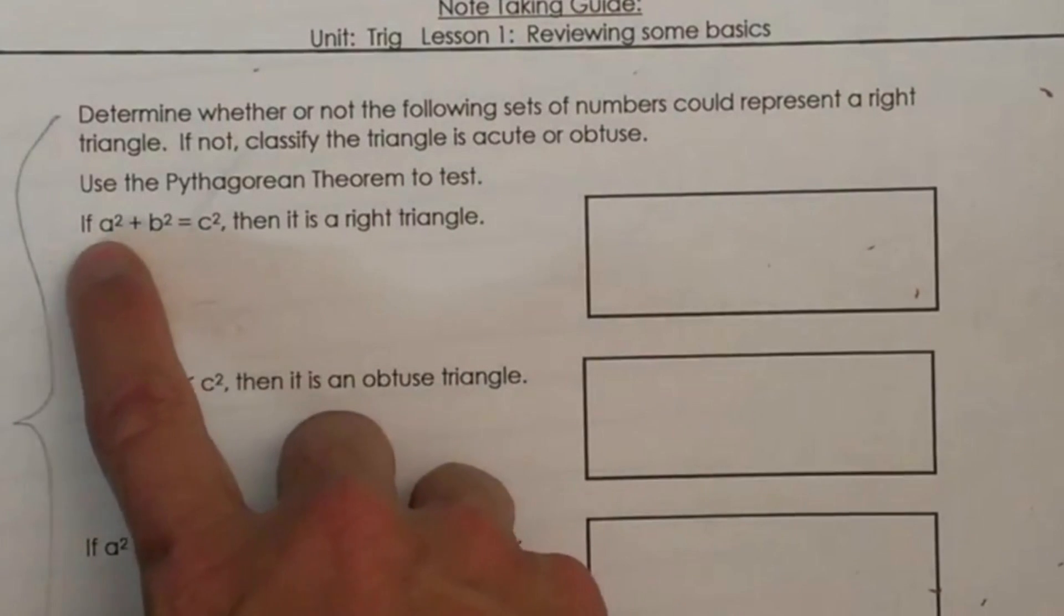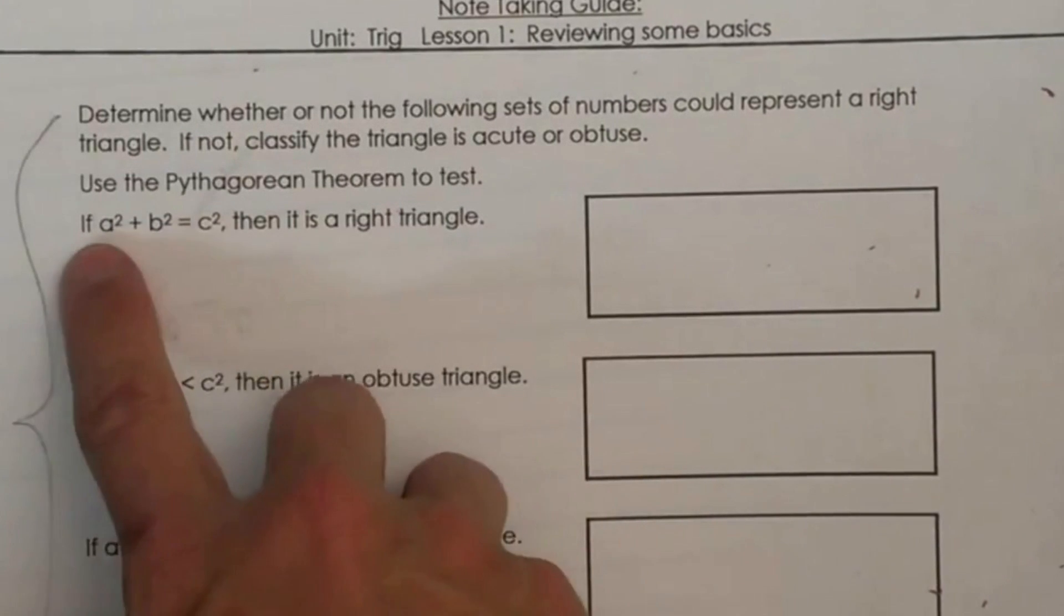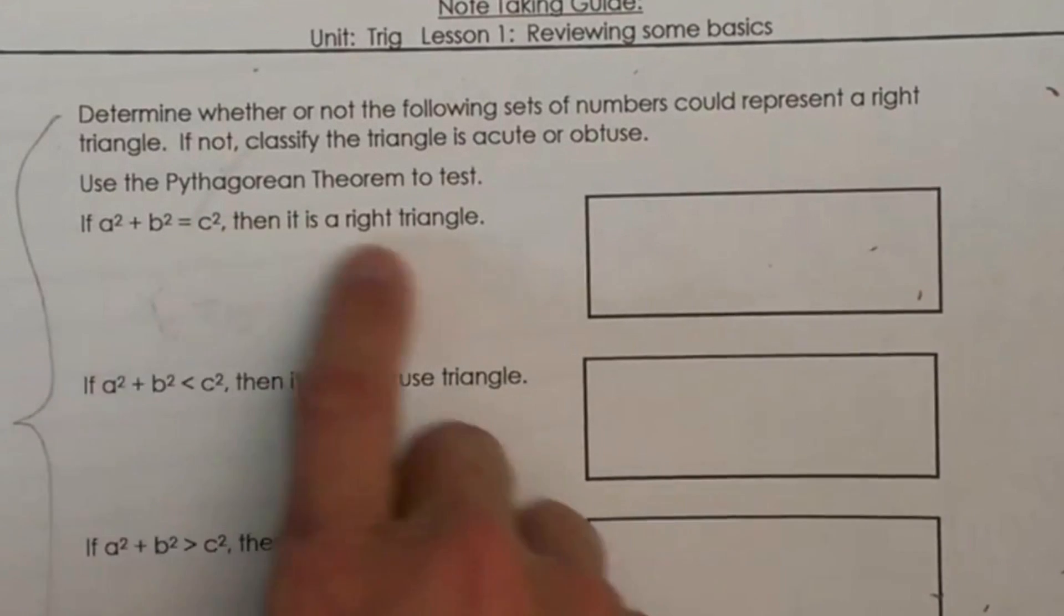What you want to do is take your two short sides A and B and compare them to C. If A squared plus B squared equals the third longest side C squared, then we know we have a right triangle.